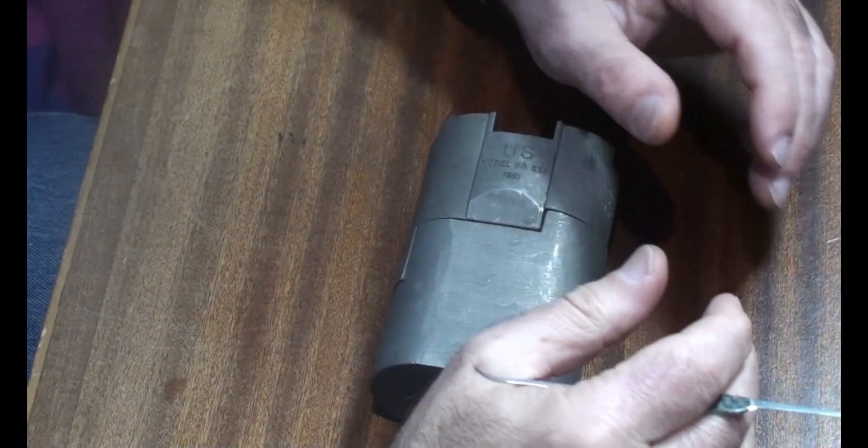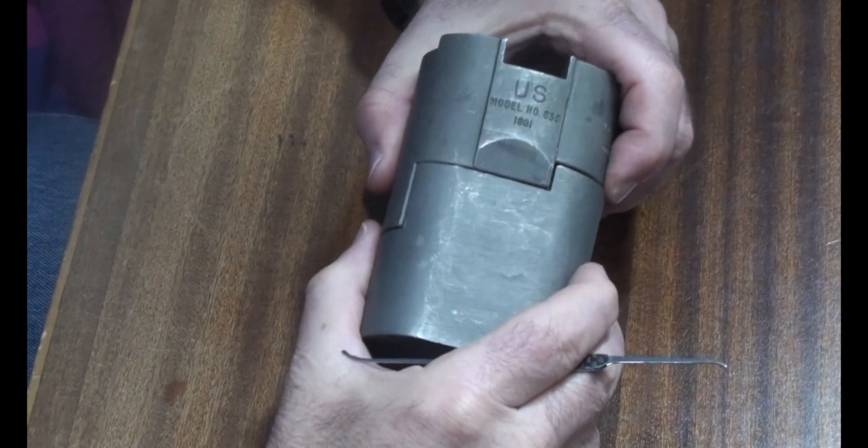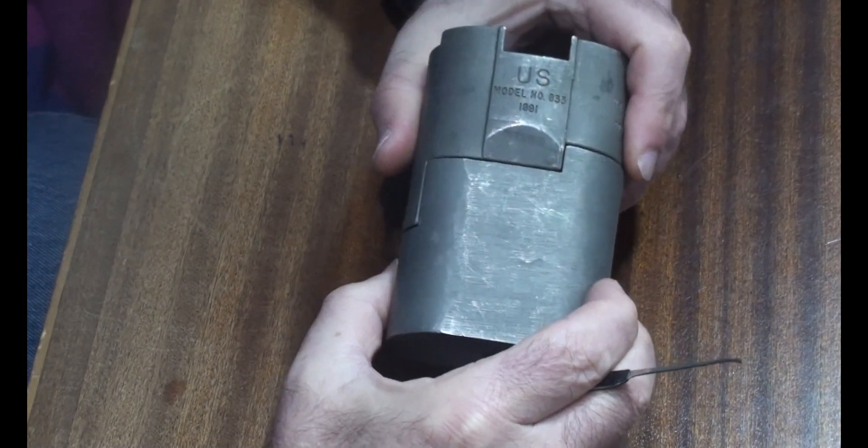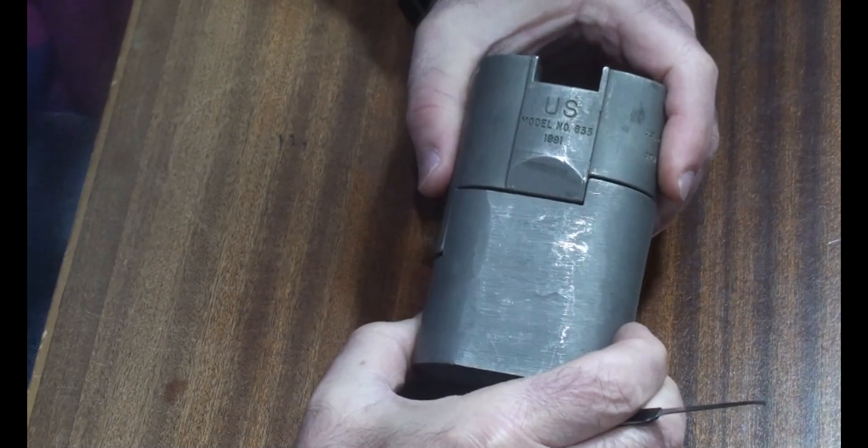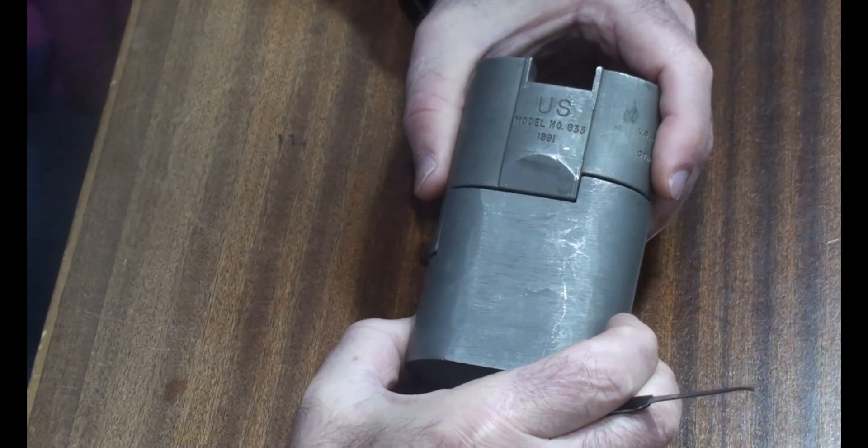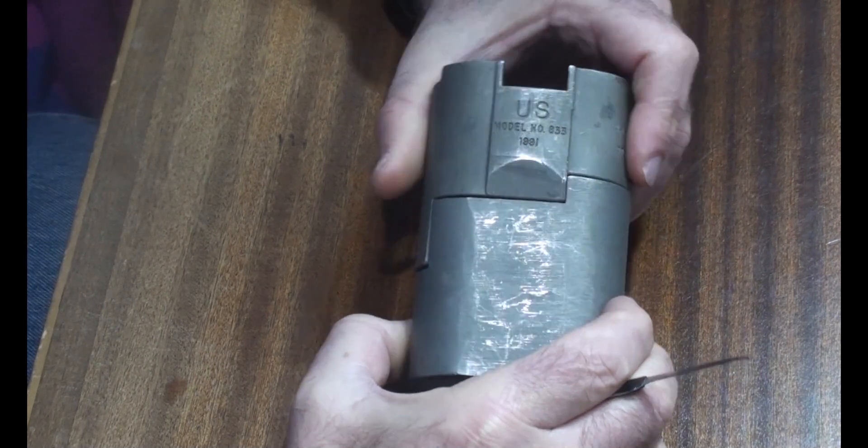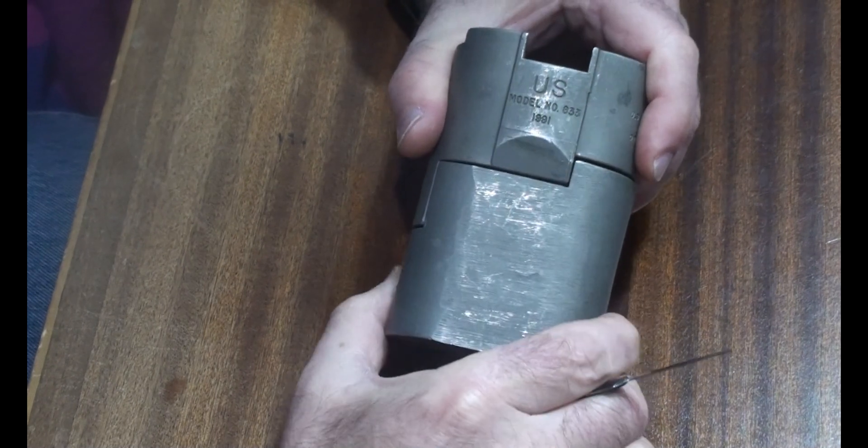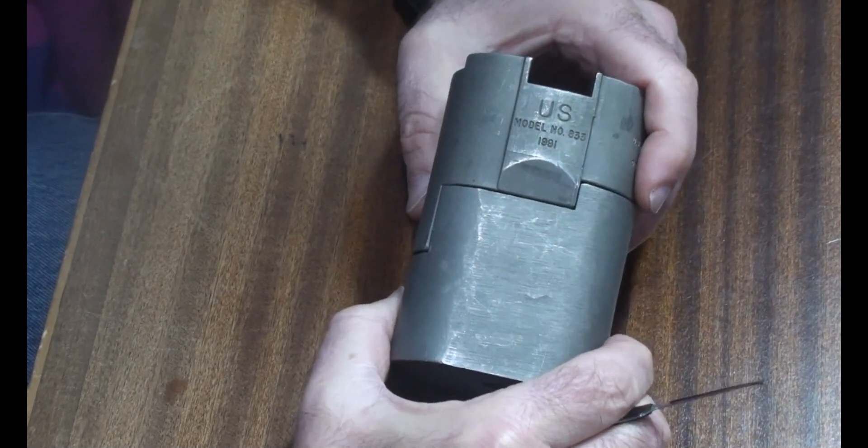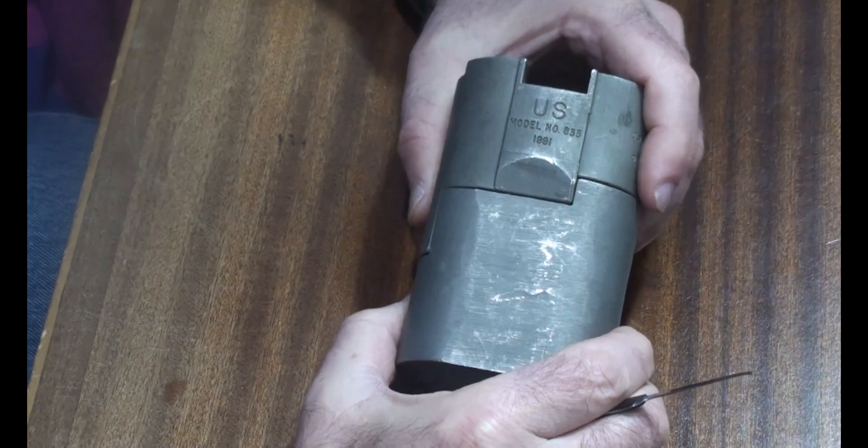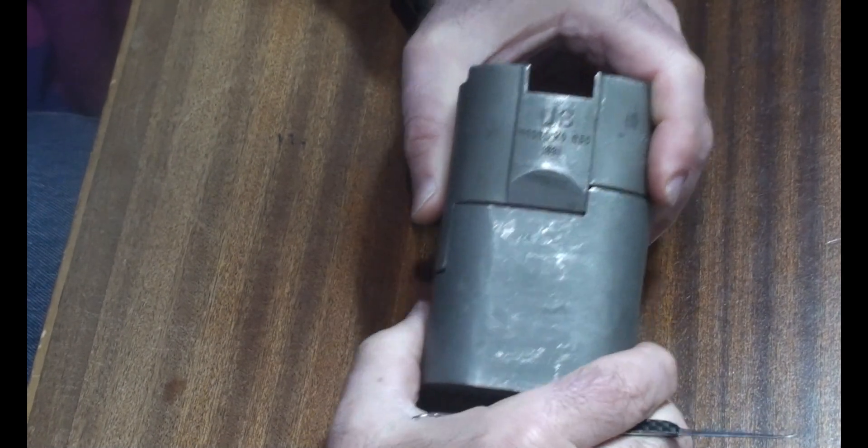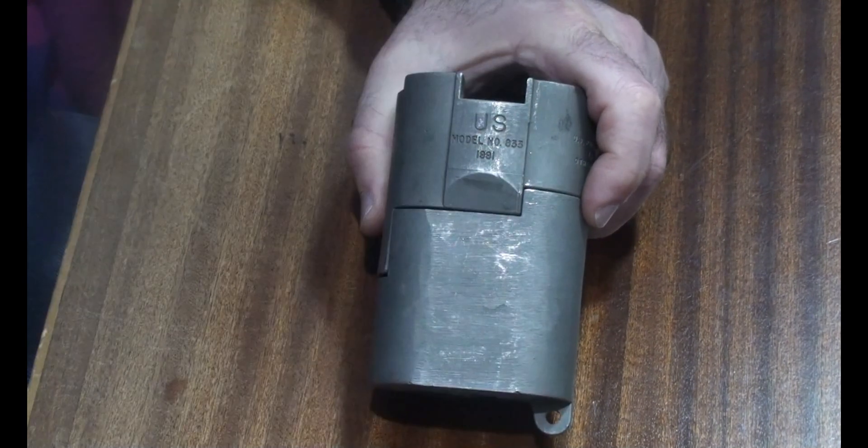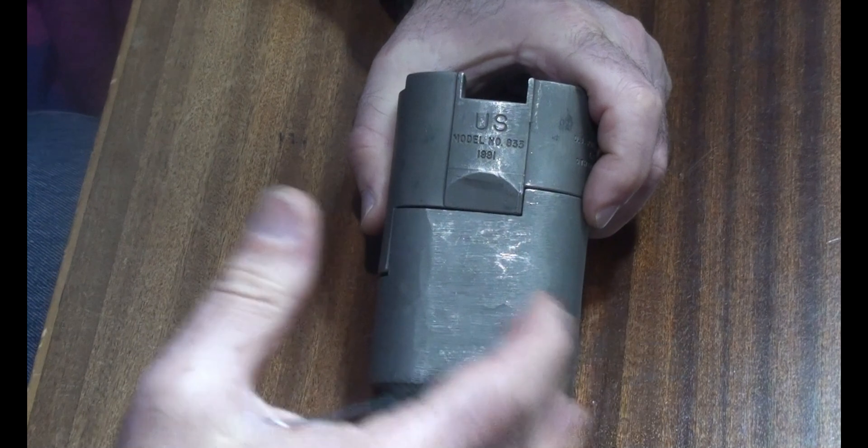However, this third lock is a different kettle of fish. This is where, frankly, bullshit walks. If I can get this lock open then I'm going to be doing well. So what is it? It is a Sergeant and Greenleaf model 833 military padlock. This is by anybody's definition one of the world's great high security padlocks. It is a beautiful lock.